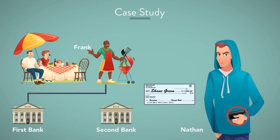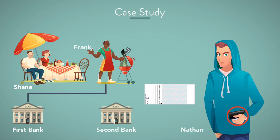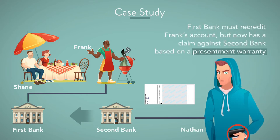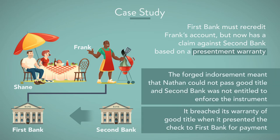Assume that Nathan also stole a check made out to Shane, and Nathan forged Shane's endorsement. Nathan then cashed the check at Second Bank, which presented it to First Bank for payment. First Bank must recredit Frank's account, but now has a claim against Second Bank based on a presentment warranty. The forged endorsement meant that Nathan could not pass good title, and Second Bank was not entitled to enforce the instrument.